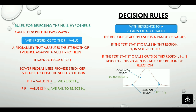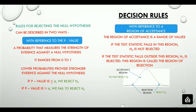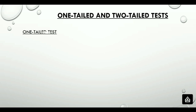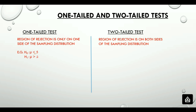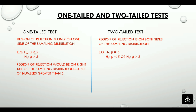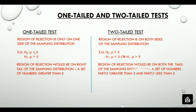Since we are talking about tails, let's look at one-tailed and two-tailed hypothesis tests. In a one-tailed test, the region of rejection is on one side of the sampling distribution, whereas in a two-tailed test, it is on both sides. For a one-tailed test, the region of rejection would be on the right tail, whereas for a two-tailed test, it will be on both tails. Here is a visual representation of the same.